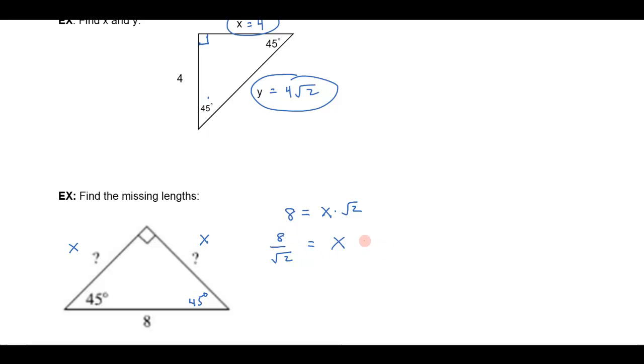So I could simplify that if I wanted to. Multiply by the square root of 2 over the square root of 2. So that would give me 8 square roots of 2 over 2, or 4 square roots of 2. So each of these sides is going to be equal to 4 times the square root of 2.